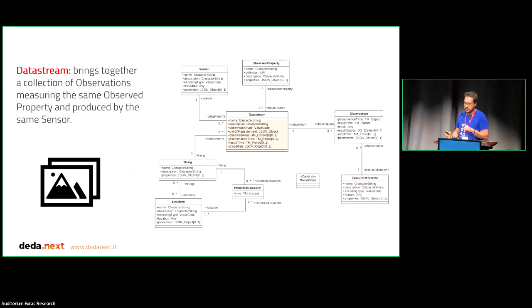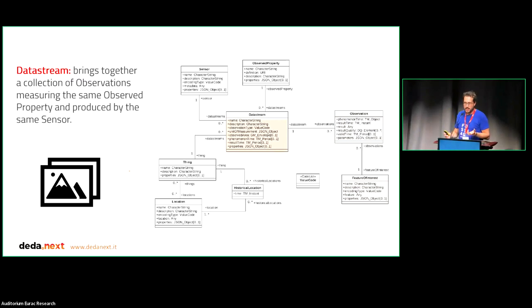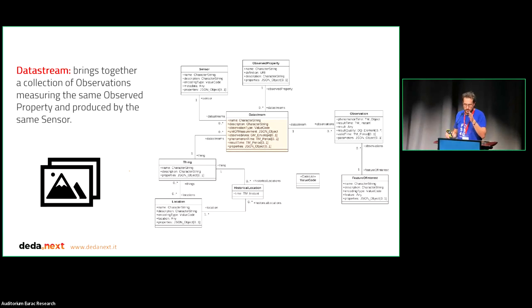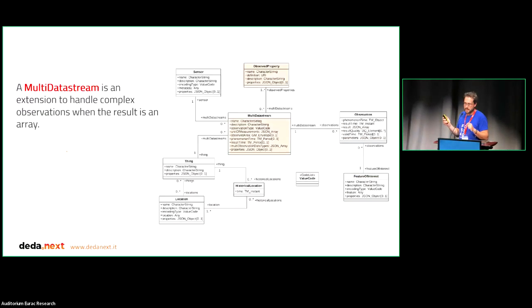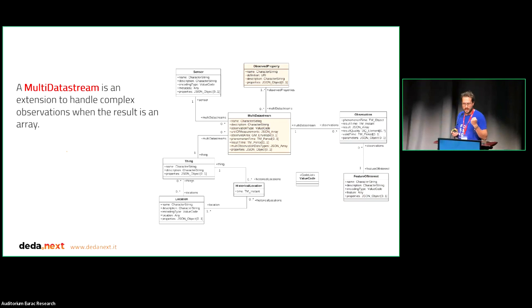The main connecting entity is 'Datastream': one datastream is a single time series of measurements of a specific sensor connected to a specific thing, measuring a specific physical quantity — the hyperspectral reflectance of that specific drone flying in that area. The first version of the model assumed every measurement was just a number, but they soon had to extend it to observations that are basically vectors — more than one observed property collected at the same timestamp. This is a minor issue but actually very useful.